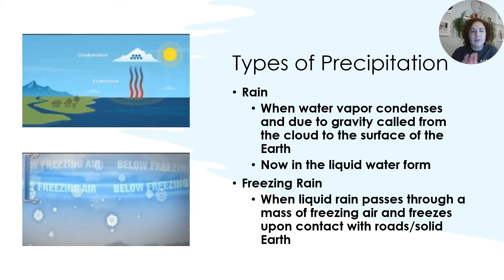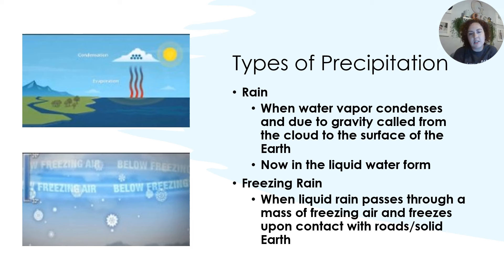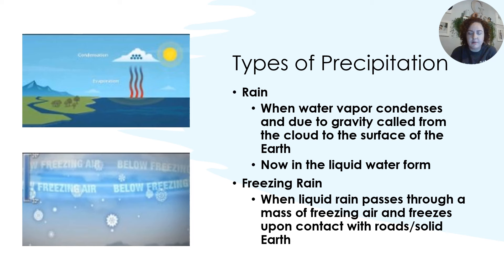Rain. These are videos linked in here, but they're not going to play on here for whatever reason — they are all linked in Schoology. Rain itself is when water vapor condenses and falls due to gravity from the clouds to the surface of the Earth. This is one of the few ways that it falls as liquid rather than a solid. This little video explains a little bit more about how we get rain versus other precipitation types.